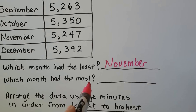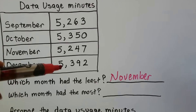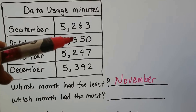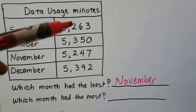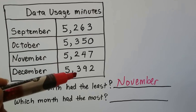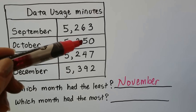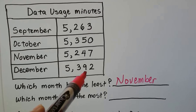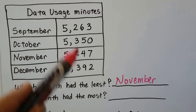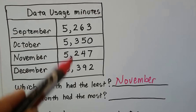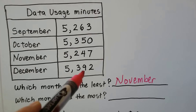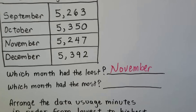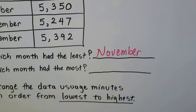Which month had the most? They all have 5 in the thousands, so we're looking for the one with a 3 in the hundreds place, which is bigger than 2. Then at the tens place, one has a 5 and another has a 9 — that's greater. So even though they have the same thousands and hundreds, December has more in the tens place, making December the month with the most data usage minutes.